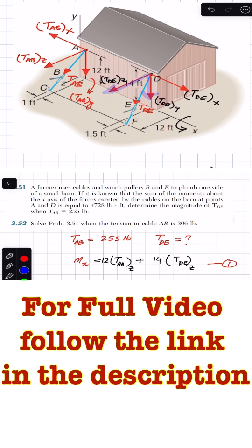And now we are given that the sum of the moments of these two forces about the x-axis is 4728 pound-feet. The components are the z components—this z component and this z component—they are producing the moment about the x-axis because you can see that this x component of TDE and this x component of TAB, they are parallel to the x-axis, so they cannot produce the moment about the x-axis.